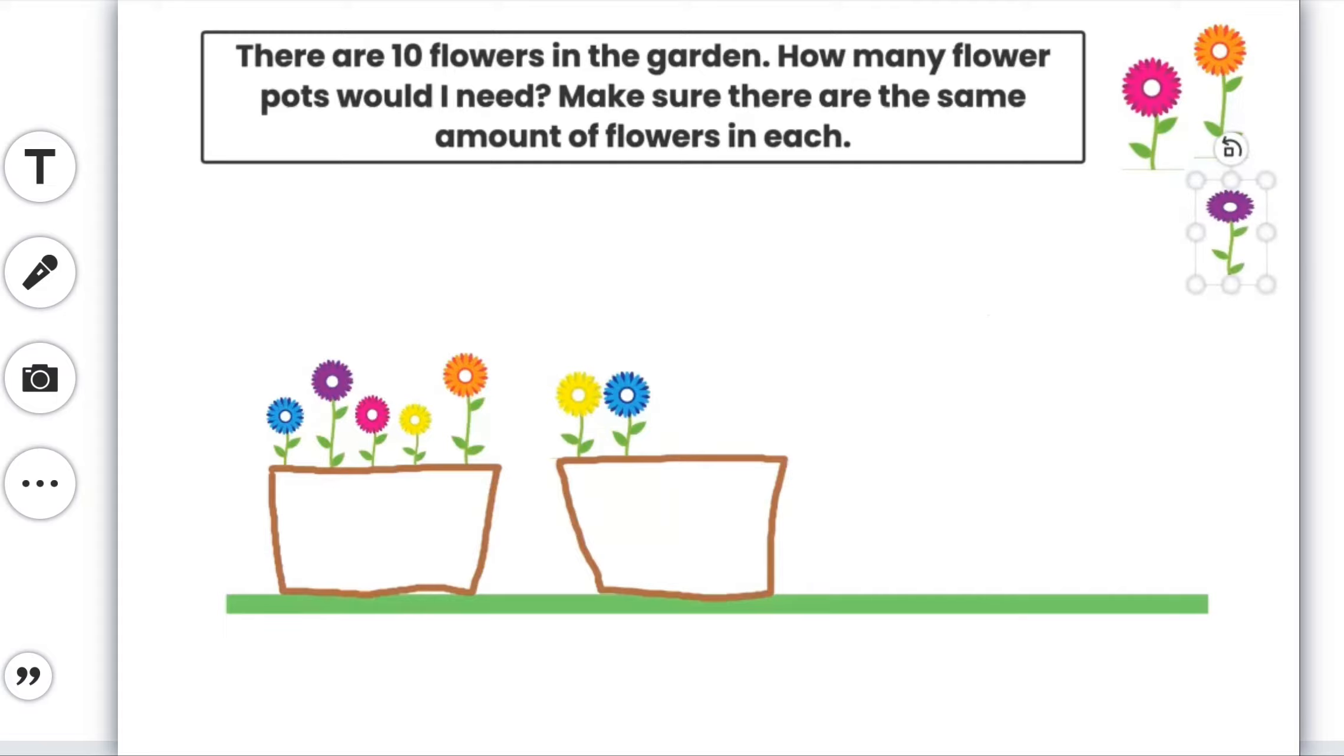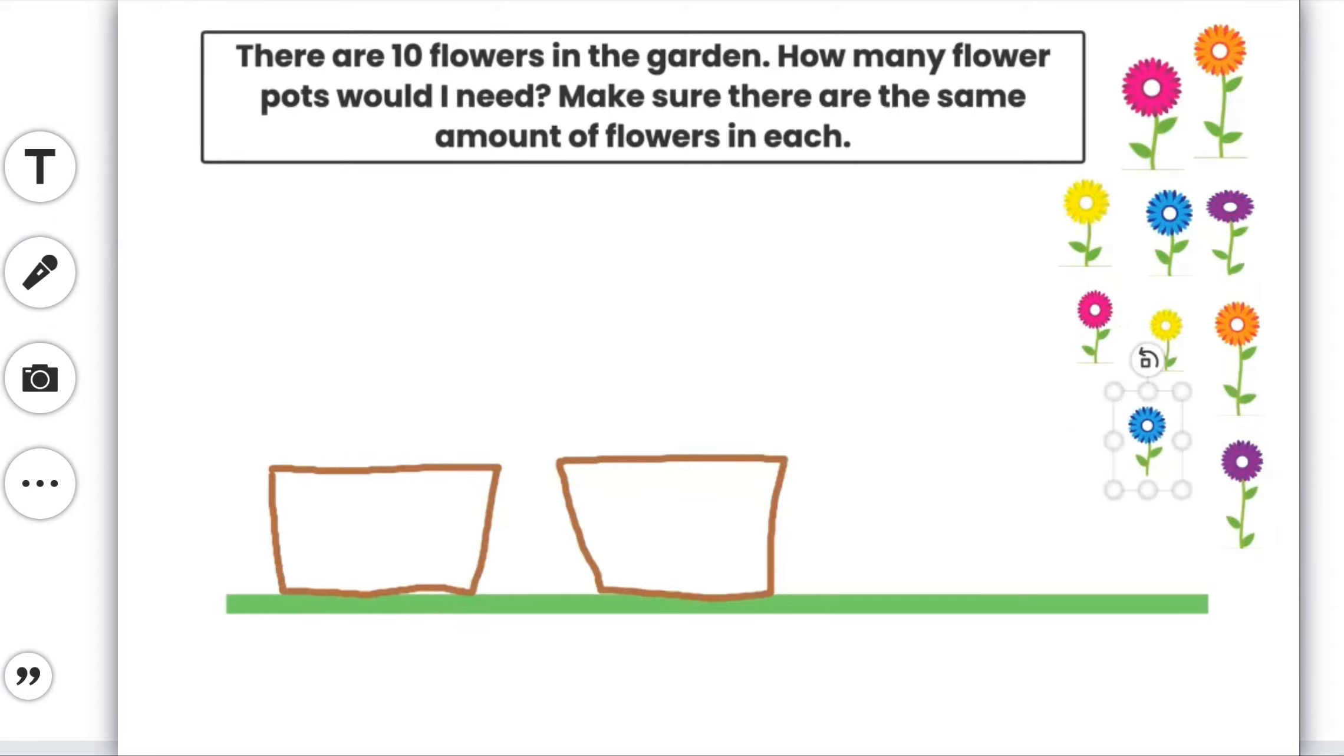Okay these questions are sometimes open-ended. So you might not need to do 2 groups of 5. Let's try a different way. Just moving all my flowers back over so that I can start again. I'm going to rub out my pots and I'm going to try and think of another way that I can have equal groups with 10. Rub this out.